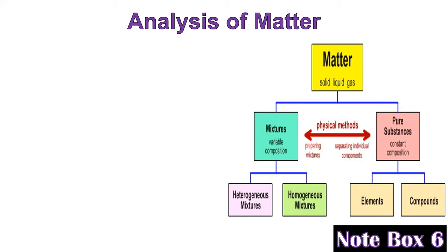Let's use this graphic organizer as an analysis of matter. Matter has different phases: solid, liquid, and gas. Matter can be broken into two types: mixtures, which do not have a chemical formula, and pure substances, which have a constant composition or chemical formula — also called chemicals. Pure substances come in two forms: elements, found on the periodic table, and compounds, which are mixes of different amounts of elements chemically combined. Mixtures have two types: homogeneous, which are evenly mixed — for example, the oxygen in air is evenly distributed — and heterogeneous.